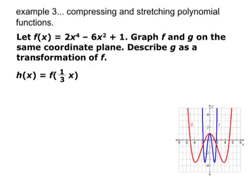Let f of x equal that function. Graph f and g on the same coordinate plane and describe g as a transformation of f. So here our inside is changing. That means that it's the hard one, which is horizontal. So 1 over b equals 1 over 3. b equals 3. So that would be the horizontal stretch by a factor of 3.